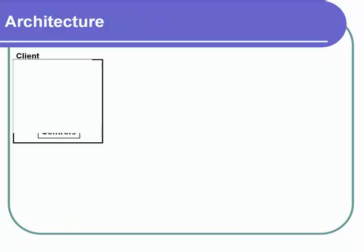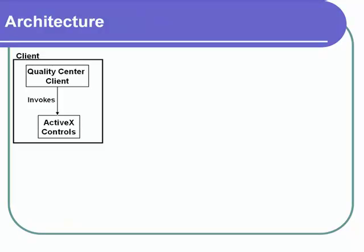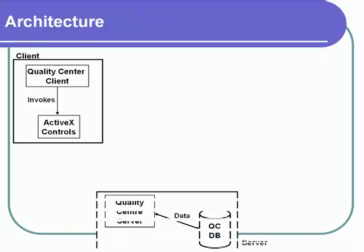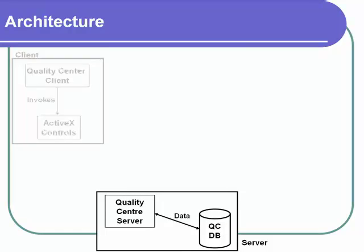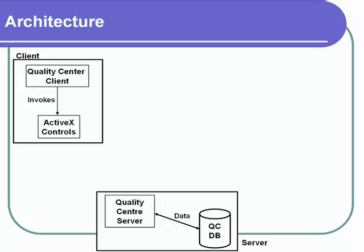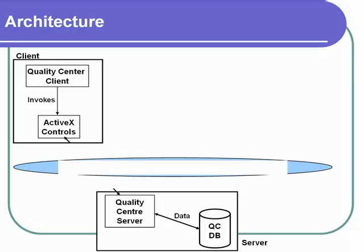Quality Center uses a client-server architecture. On the server side, Quality Center stores test information in a database. On the client side, the client uses ActiveX controls to communicate with the server. It is possible to start execution of an automated test script on a separate machine at a designated time using Quality Center, by providing the IP address of that machine.